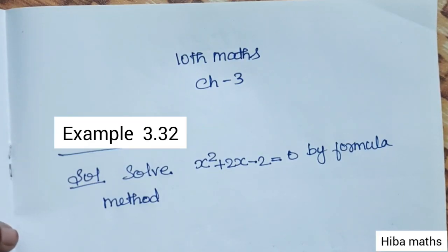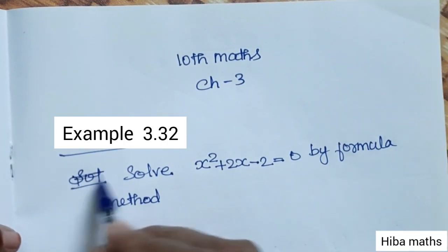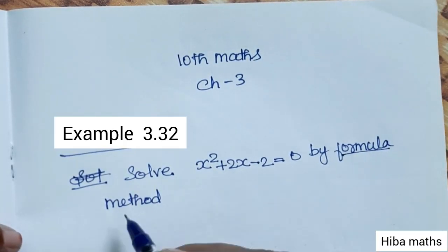Hello students, welcome to Hibamax. 10th standard mathematics chapter 3, example 3.32. Solve x² plus 2x minus 2 equals 0 by formula method.